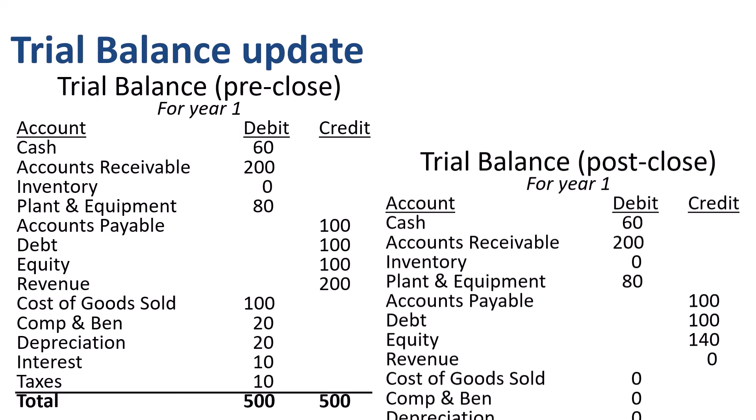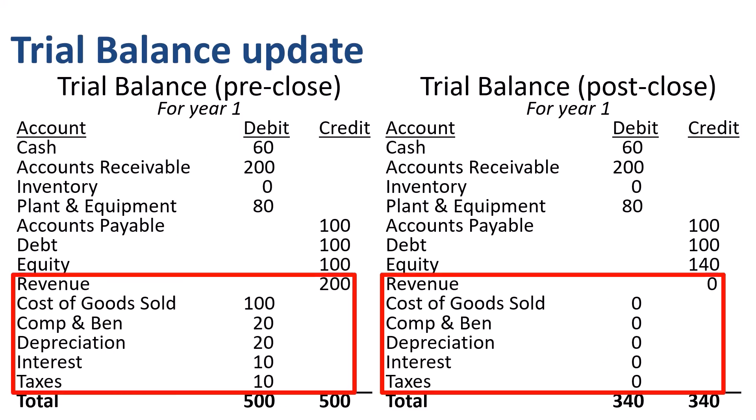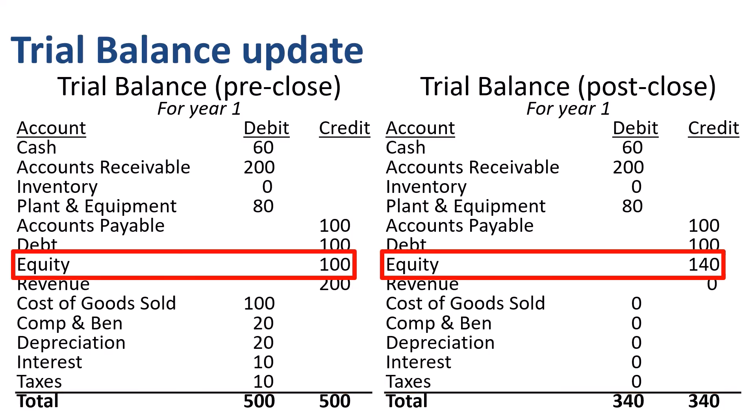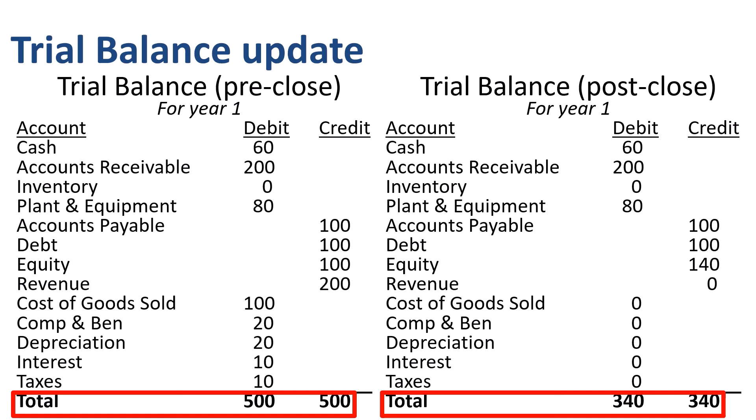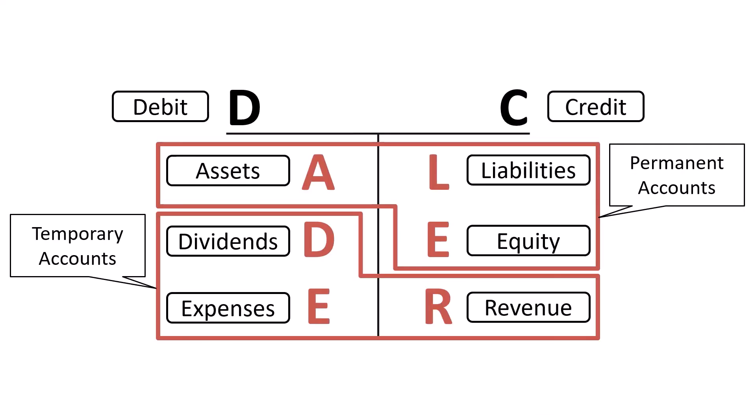Next is an update of the trial balance from pre-close to post-close. All temporary accounts at the bottom of the post-close trial balance now have an account balance of zero, and are ready to go for the new accounting period. Most of the permanent accounts have unchanged balances. The only one that changed due to the closing entries is equity, as retained earnings rolls up into this section. Equity has gone up from 100 pre-close to 140 post-close. What's important to note is that the sum of the debits still equals the sum of the credits, so we are still compliant with the accounting equation. Permanent versus temporary accounts — accounts whose balance is carried over versus accounts that need to be reset to zero through closing entries to start a new accounting period.